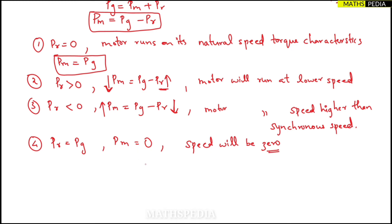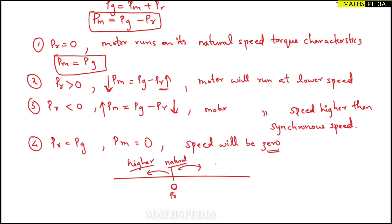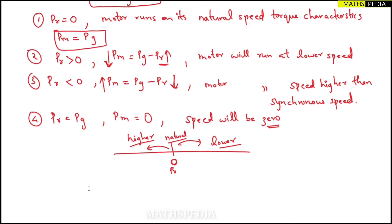To summarize using a number line: when PR is less than zero, the motor runs at higher speed; when PR is zero, it runs at synchronous speed; when PR is greater than zero, it runs at lower speed. By varying PR from zero to PG, the speed can be controlled from synchronous speed down to zero.